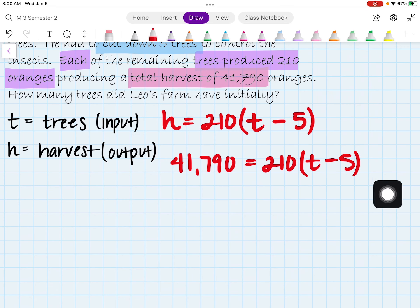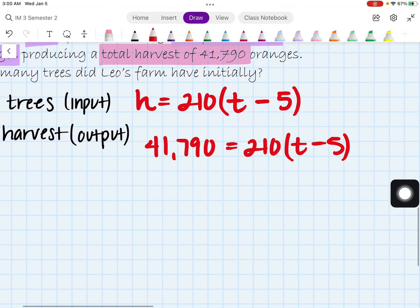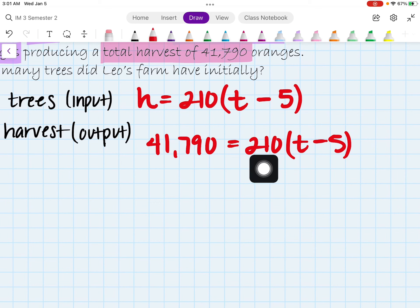All right, so in this case, we want to solve for t here. Now, two ways we could approach this. I could actually distribute the 210 into the parentheses, which would make my life harder. So the easy step for us is actually to divide both sides by 210.